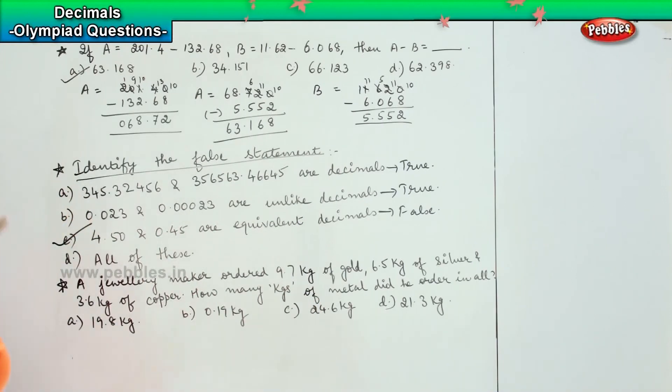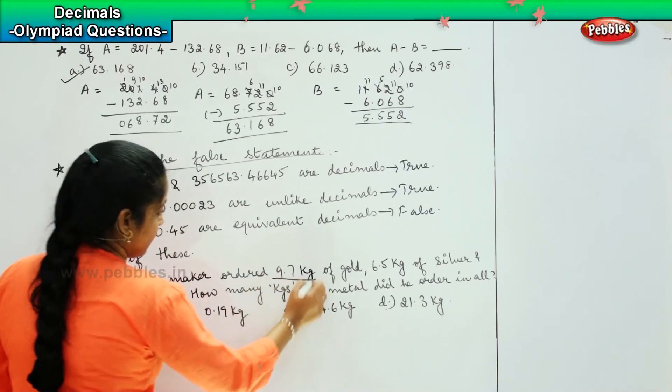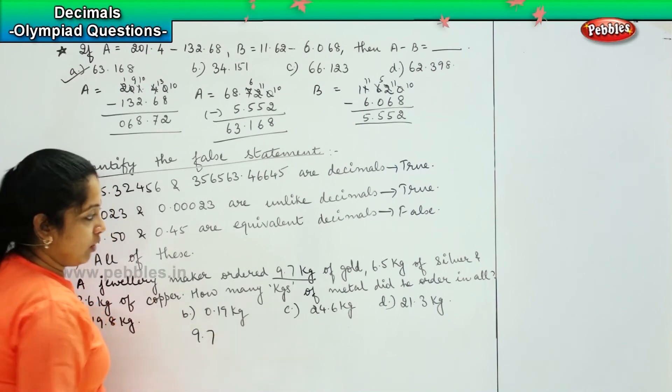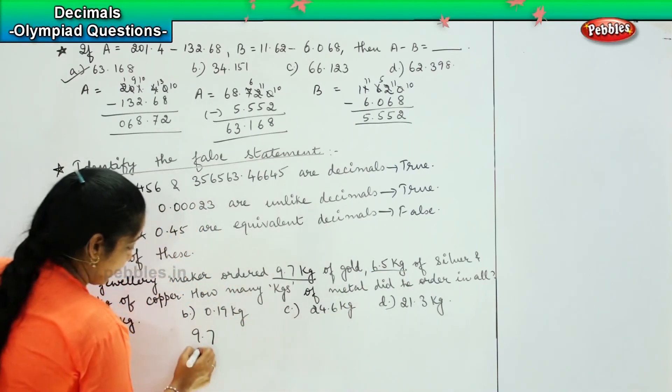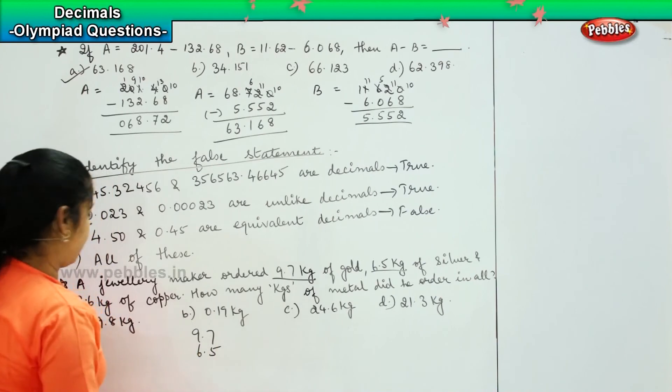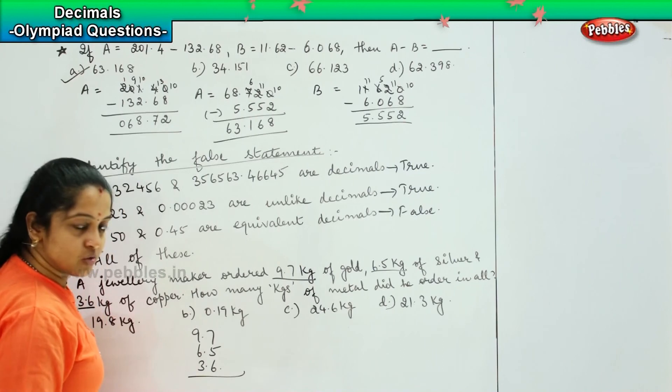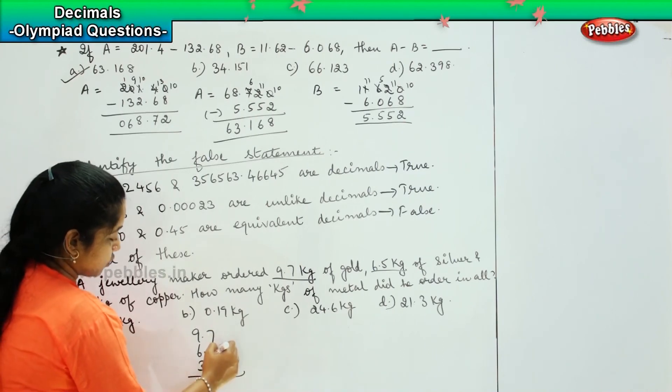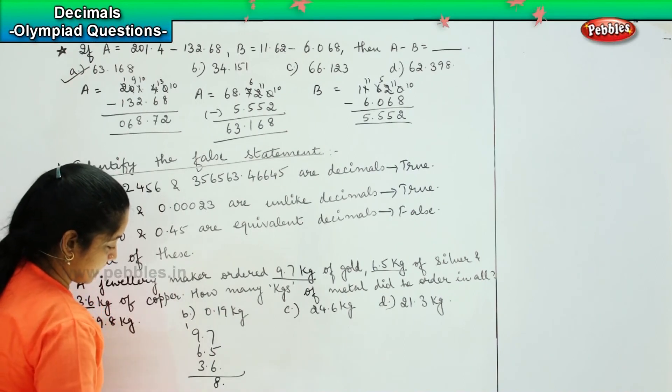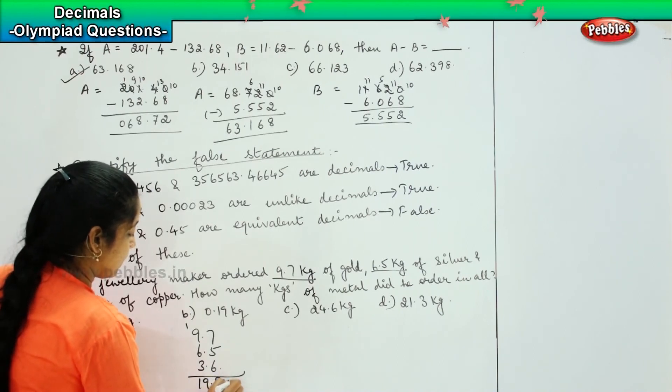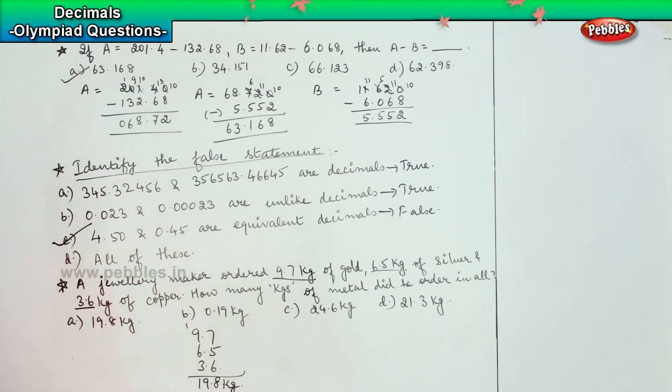So here they are asking that a jewelry maker had ordered 9.7 kg of gold, 6.5 kg of silver and 3.6 kg of copper. So we need to add them. 7 plus 5, 12. 12 plus 6, 18. 1 plus 9, 10. 10 plus 6, 16. 16 plus 3, 19. So he has ordered a total of 19.8 kg of metal.